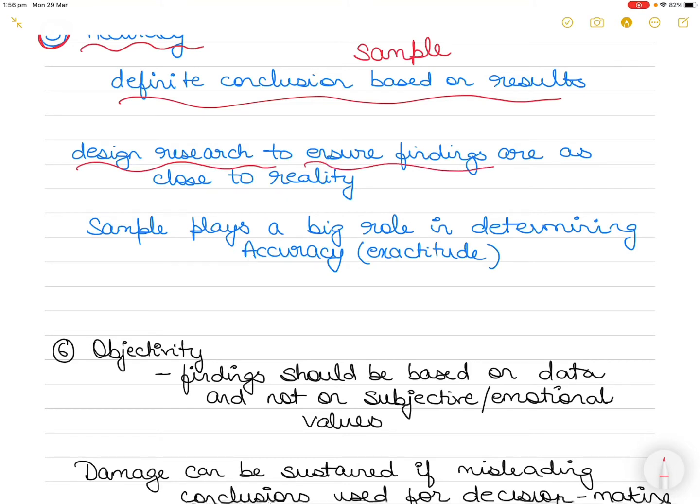However, we would like to design our research in a manner that ensures our findings are as close to reality - the true state of affairs in the universe - as possible, so we can put faith and confidence in our findings. Accuracy refers to how close the findings based on sample are to reality.